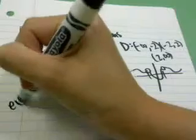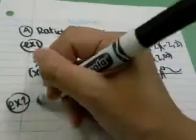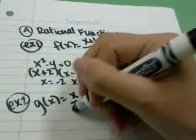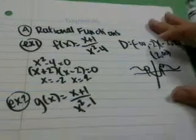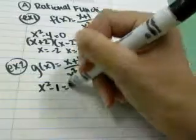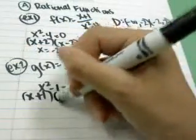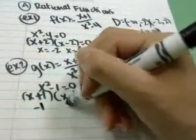Let's try another example like that. Example number 2: if I had g(x) equals (x+1) over (x²-1), I want to set my denominator equal to 0. So I have x²-1=0. That can be factored into (x+1)(x-1). And if I got my two solutions, they would be -1 and 1.